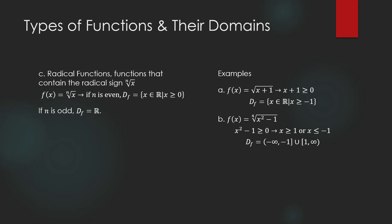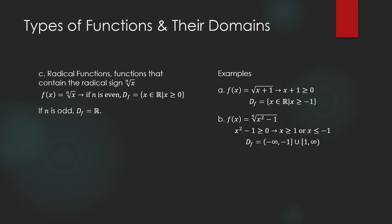Using interval notation, the domain of the fourth root of x² − 1 is the union of two sets: the set of real numbers greater than or equal to 1, and the set of real numbers less than or equal to −1. As for the cube root of x + 4, the index is odd, so the domain is the entire set of real numbers.